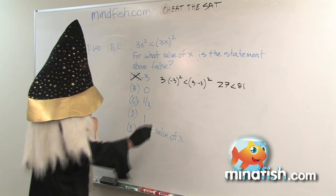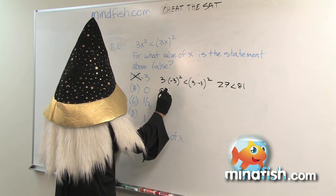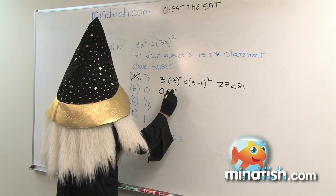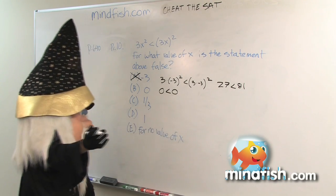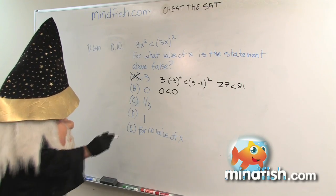We're going to try 0. We put in 0 and we're going to get 0 is less than 0. Now that seems false because it's not greater than or equal to, it's greater than. So that looks pretty good right now.